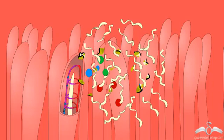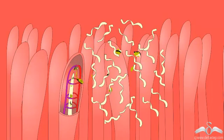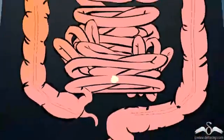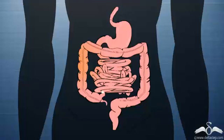Glucose and amino acids get absorbed in the blood vessels of the villi, and fats get absorbed in the lymph ducts. Now these unabsorbed food molecules travel through the large intestine where water and minerals get absorbed before getting excreted out of the body.